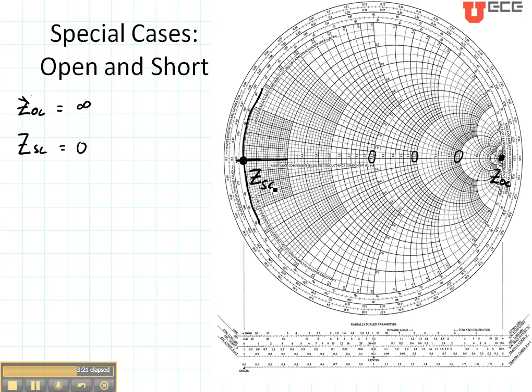Now how about the admittance of an open or a short? Remember if we wanted to find the admittance, we simply translate through the center of the Smith chart. Let's do the short circuit first. We're just going to translate that through the center of the Smith chart right over to here. So this is the admittance of a short circuit. Let's do the same thing with the open circuit, and this is the admittance of an open circuit.